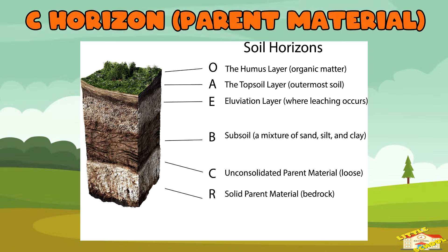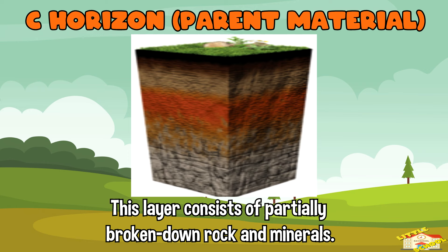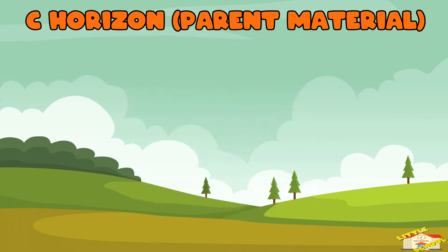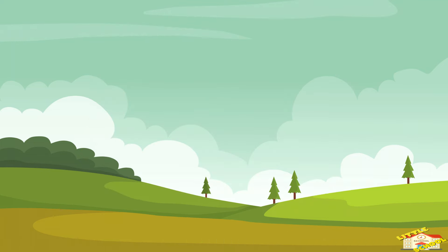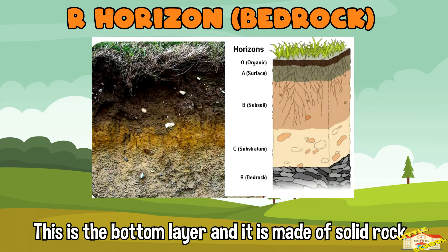C-Horizon, parent material — this layer consists of partially broken down rock and minerals, and contains little organic material. R-Horizon, bedrock — this is the bottom layer, made of solid rock.